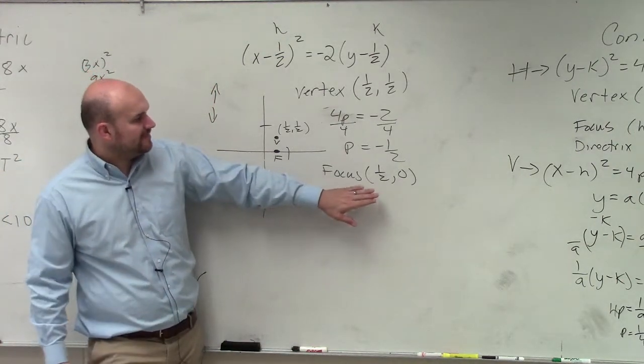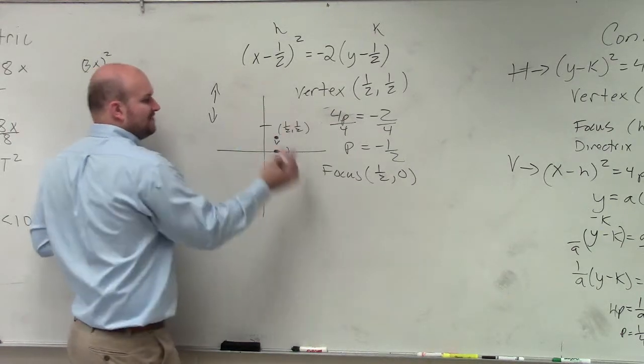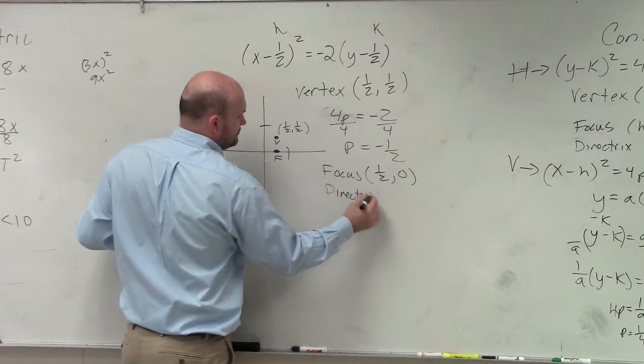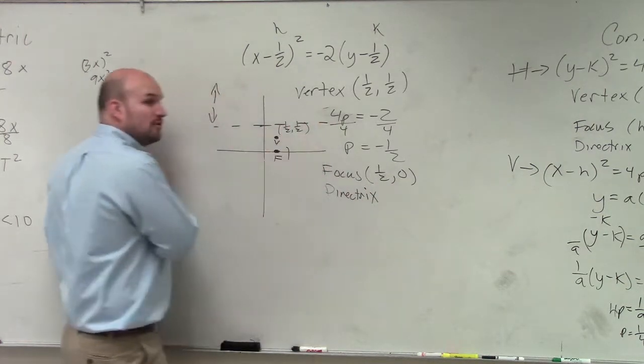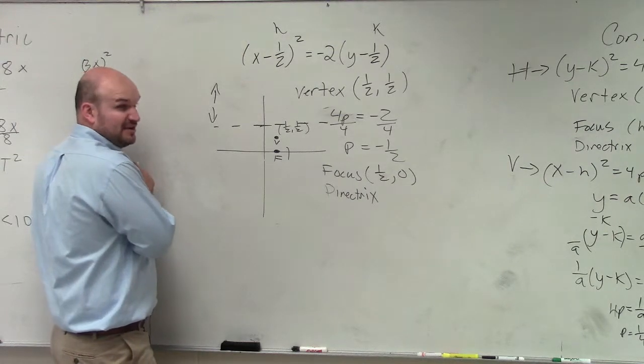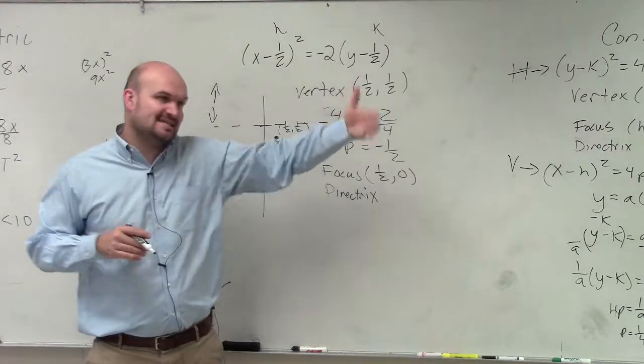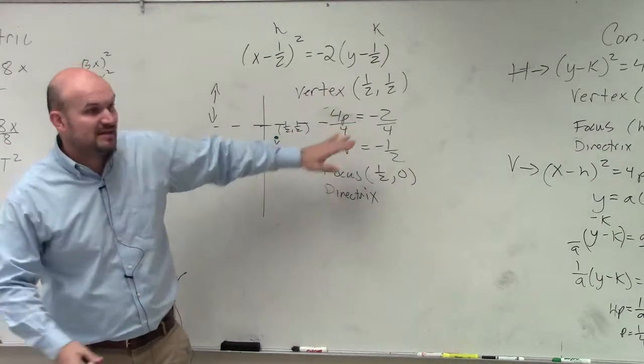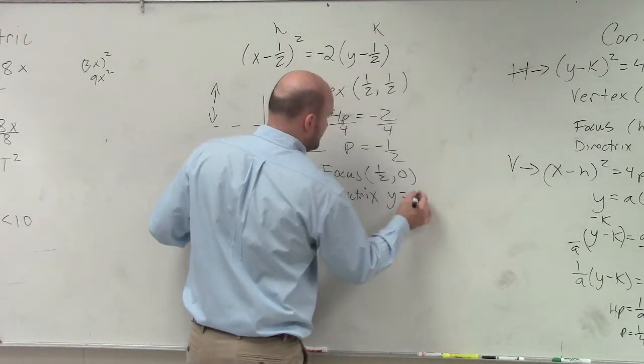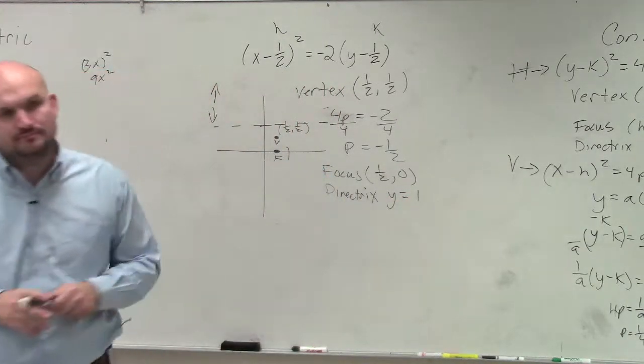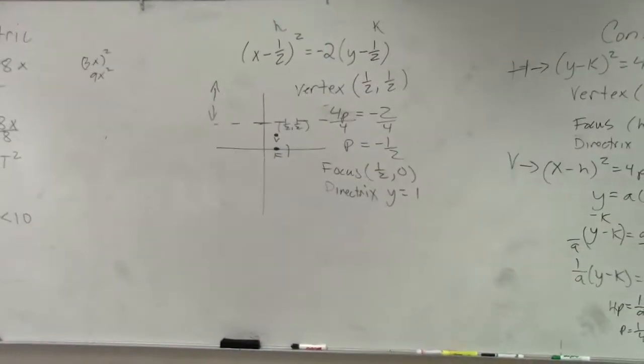So to wrap up this problem, I just need to find the vertex or the directrix, which is going to be 1 half in the opposite direction, which what I want you guys to understand is now we have a horizontal line. That's very important because last time our directrix were vertical lines. So we said x equaled h. Now it's going to be y equals 1.